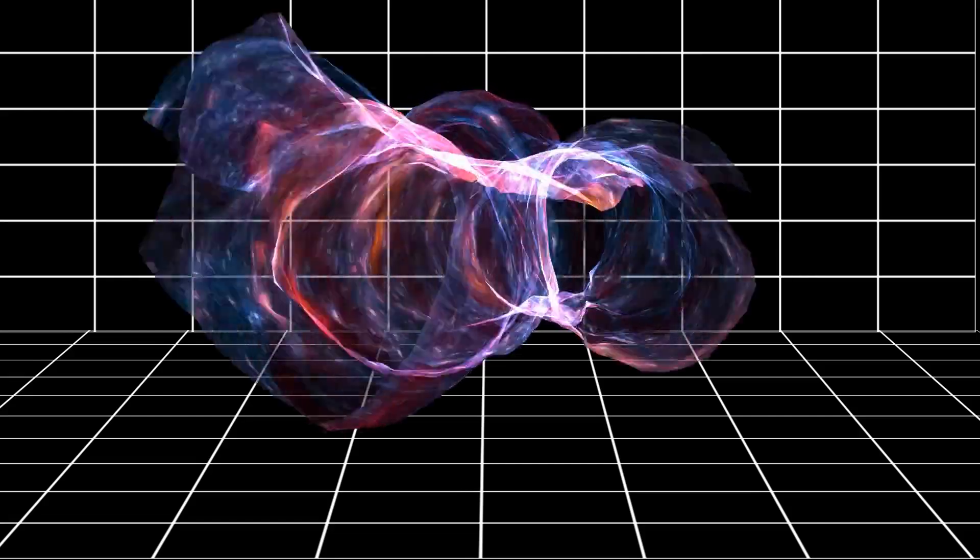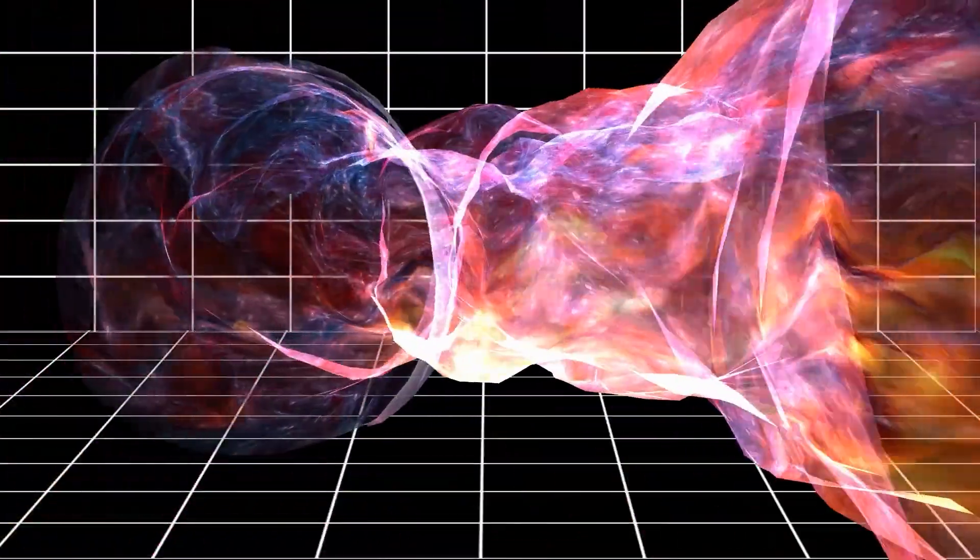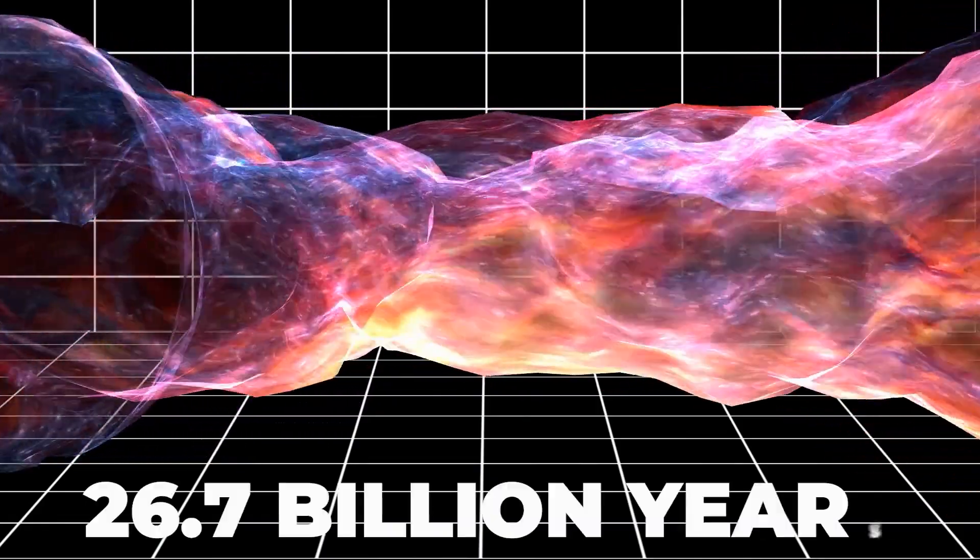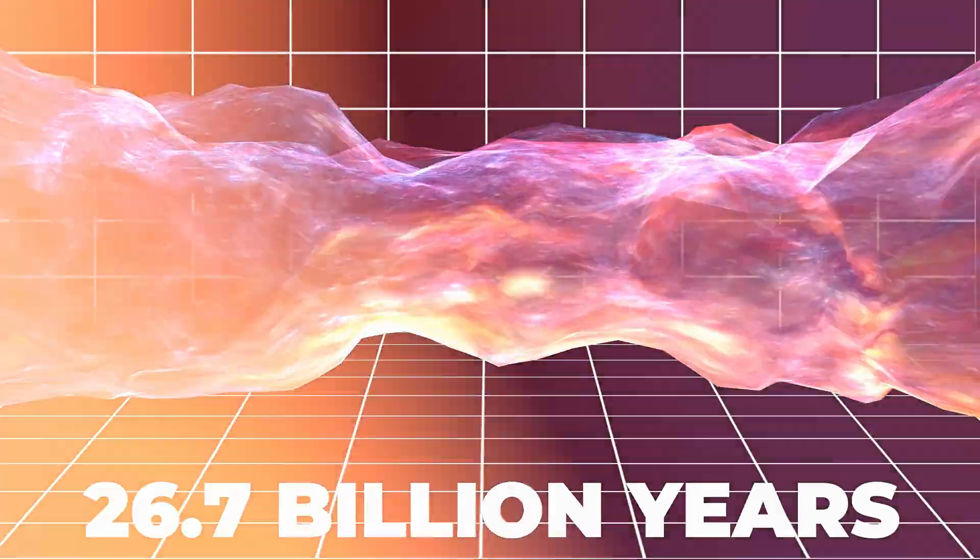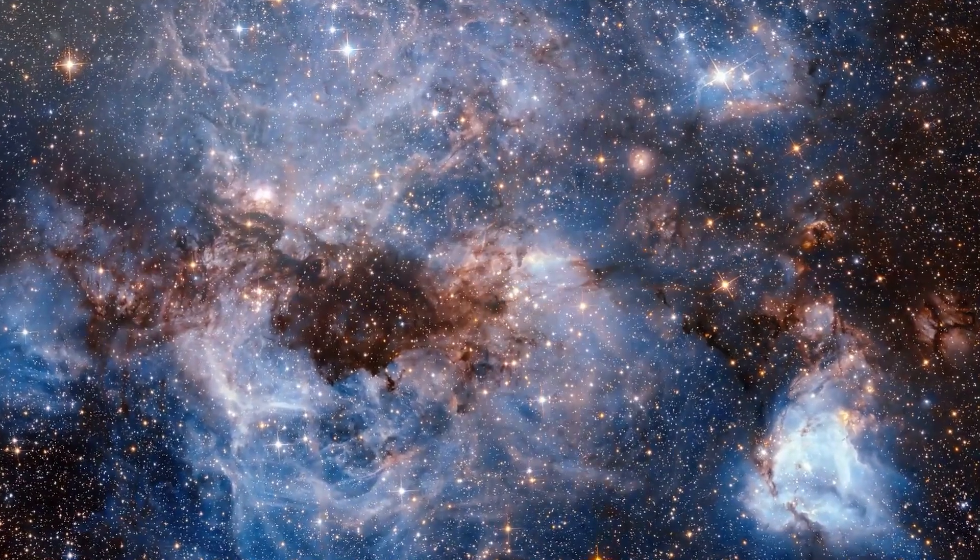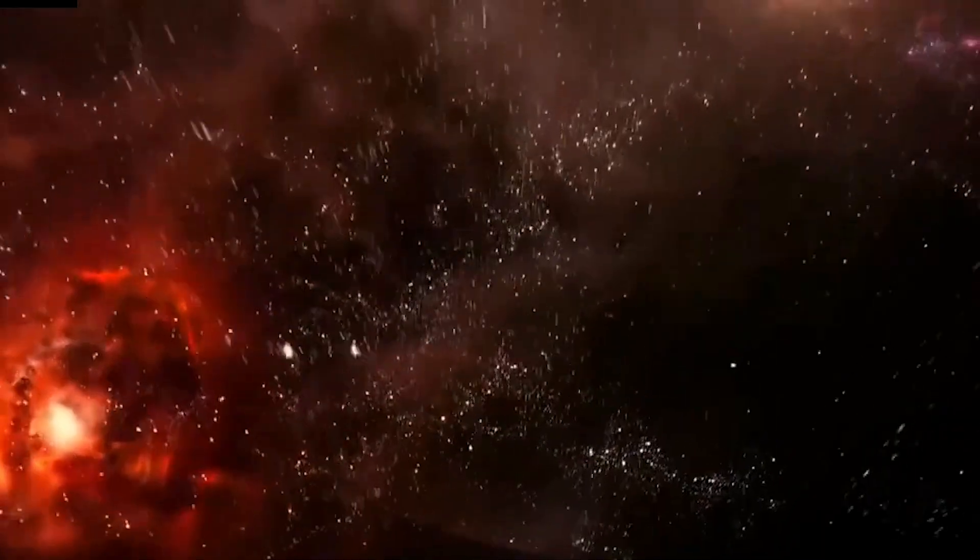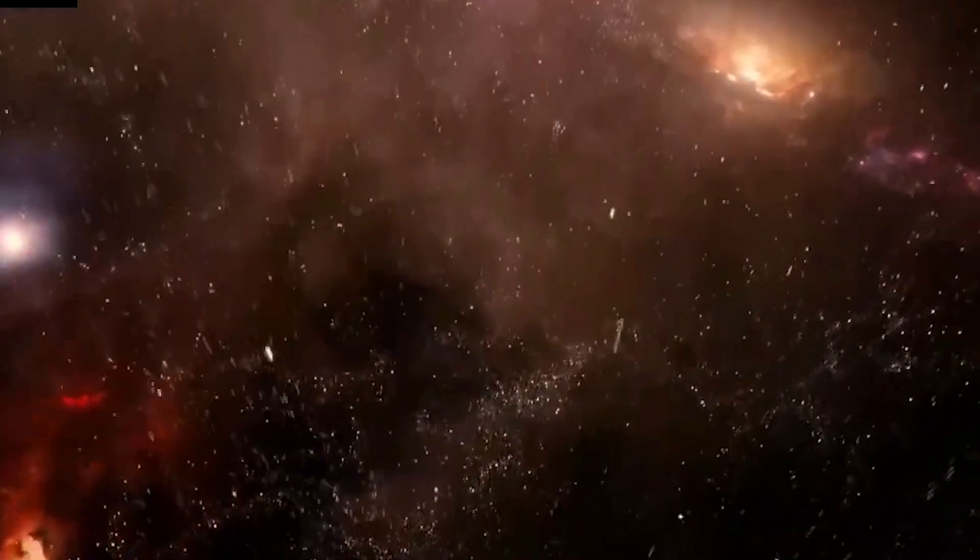One controversial theory suggests the universe could be nearly twice as old as we thought—a staggering 26.7 billion years. While this claim is met with skepticism, it illustrates how profoundly the Hubble tension could reshape our cosmic timeline. But here's where it gets even more mind-bending.